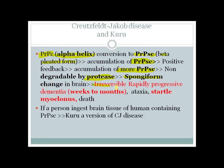This dementia is often irreversible and develops over weeks to months, making this one of the most rapidly progressive dementias known. It is typically associated with startle myoclonus — brief jerky movements of the muscles — as well as ataxia, and ultimately leads to death due to irreversible brain damage.